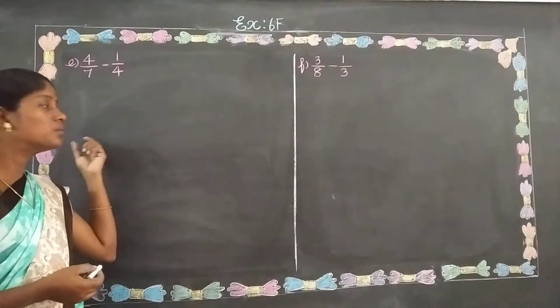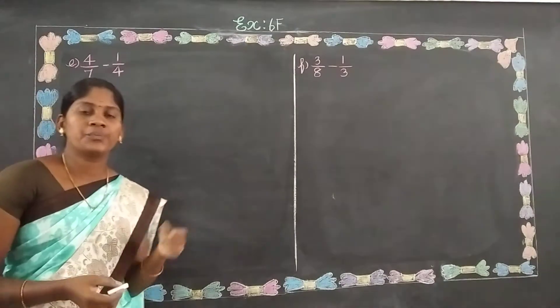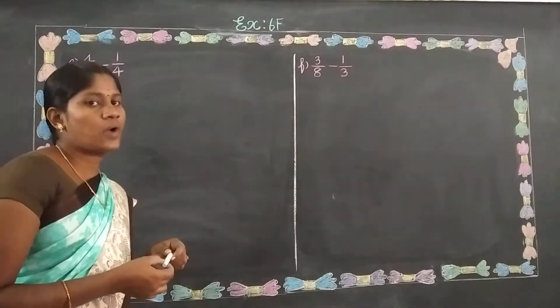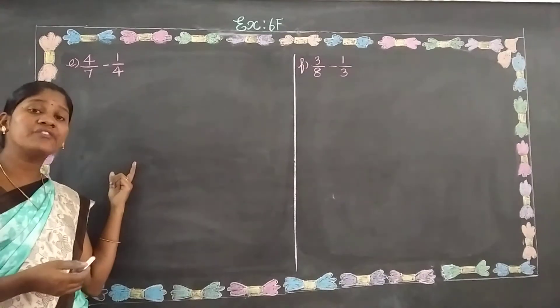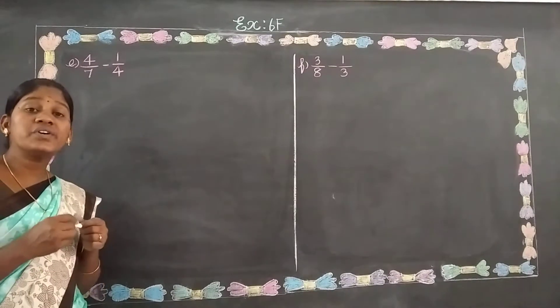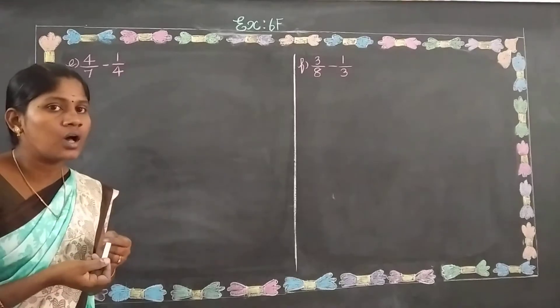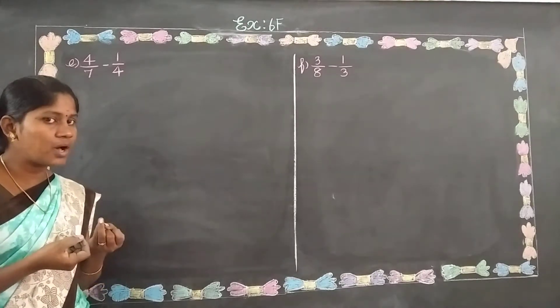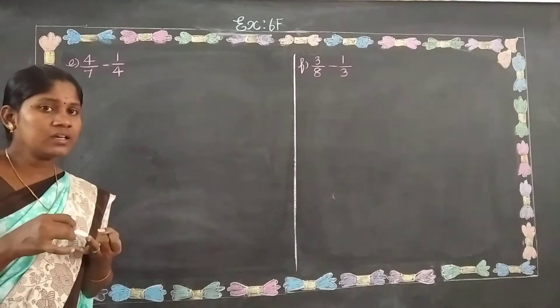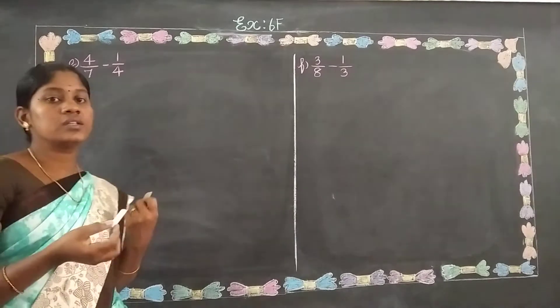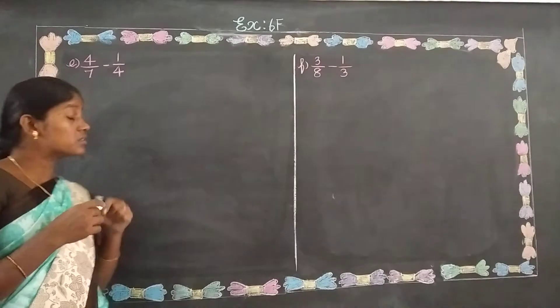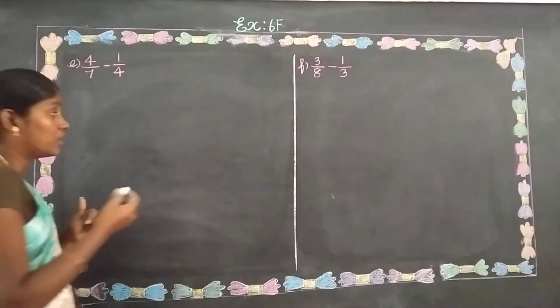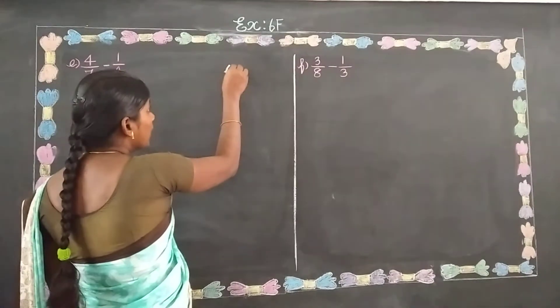4 by 7 minus 1 by 4. We can do this with 7 and 4. 7 and 4, same table 2 table 4, 7 by 7, no. 3 table 4, 7 by 7, next 4 table 4, 7 by 7. 4 by 7, so 4 and 7 same table by 7, so we can do this with multiple.